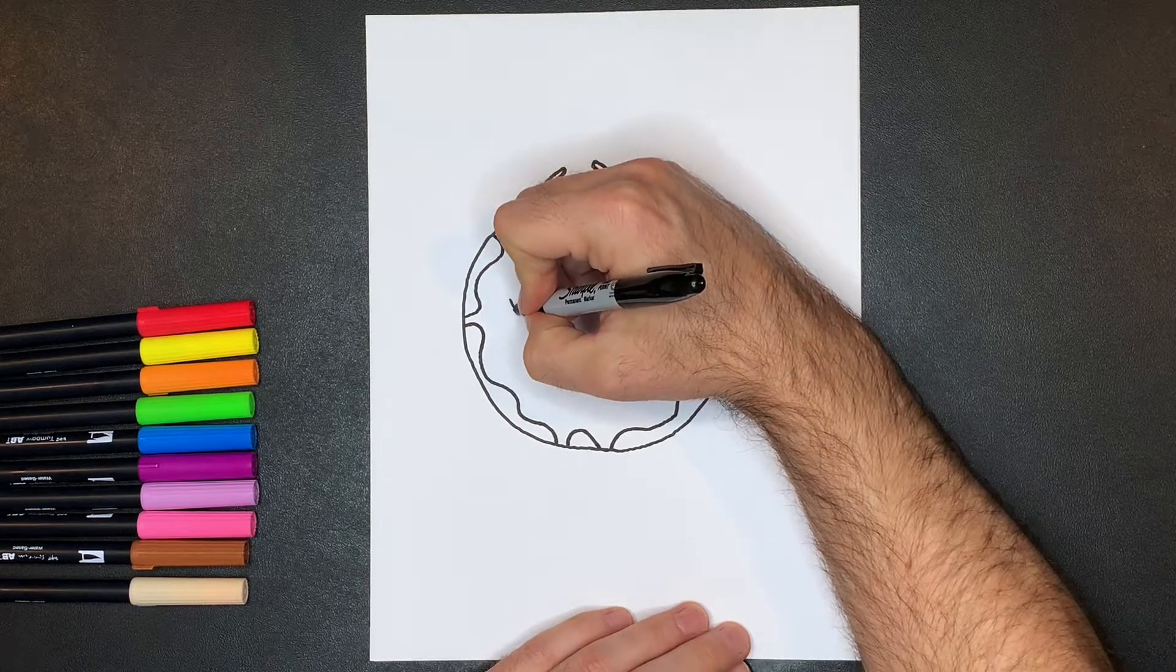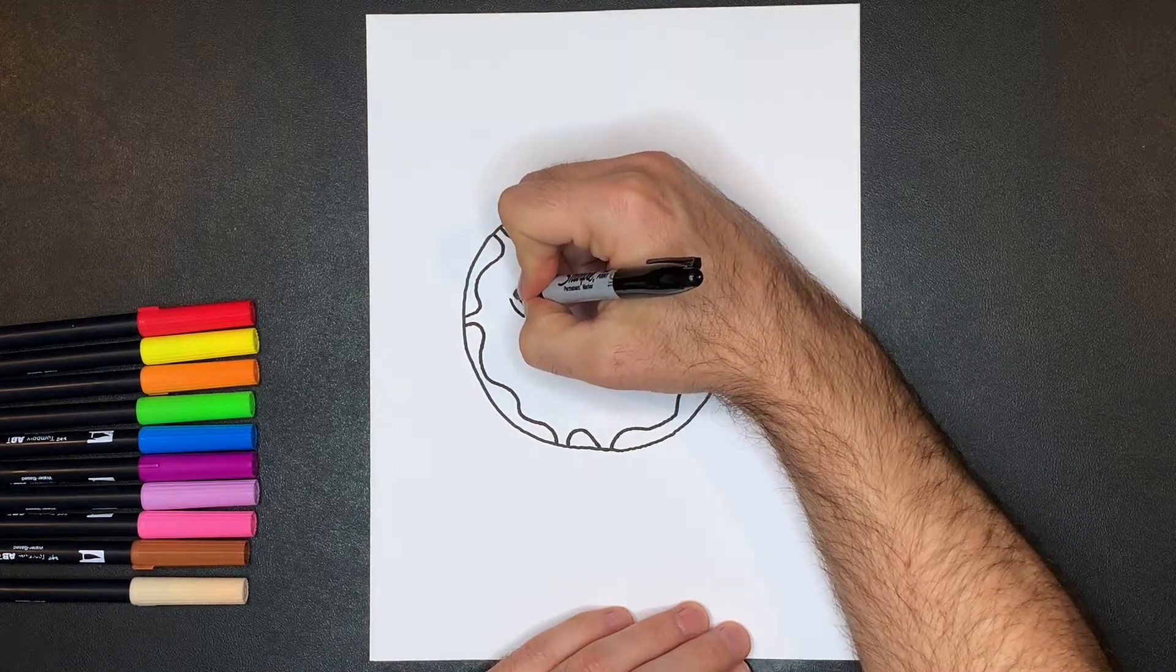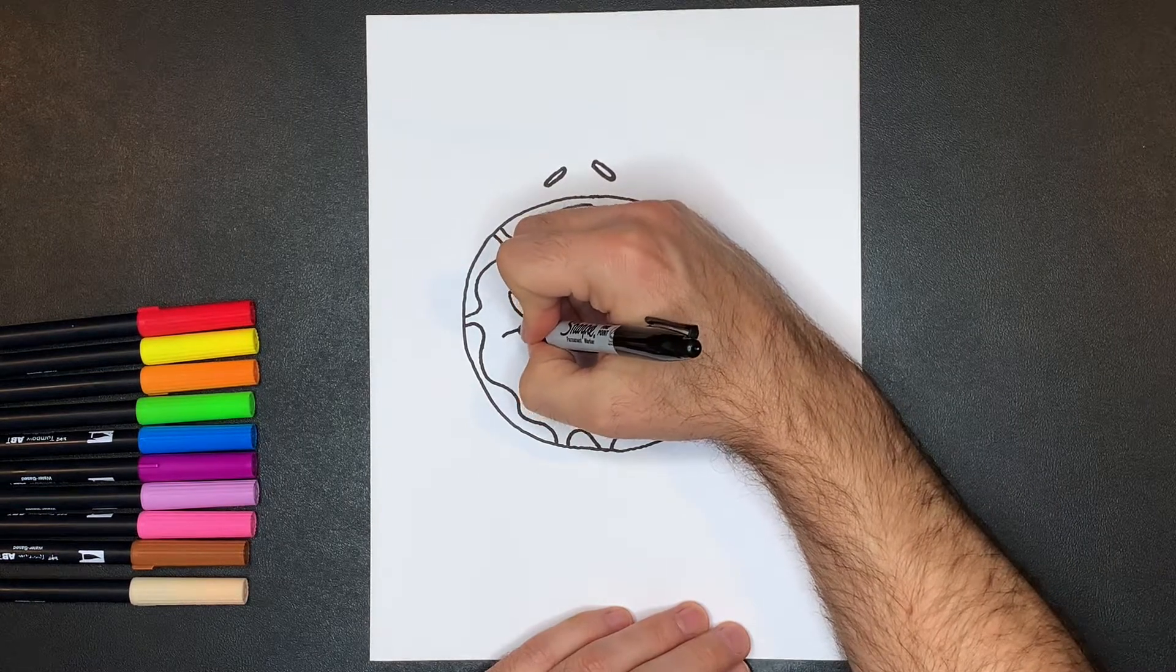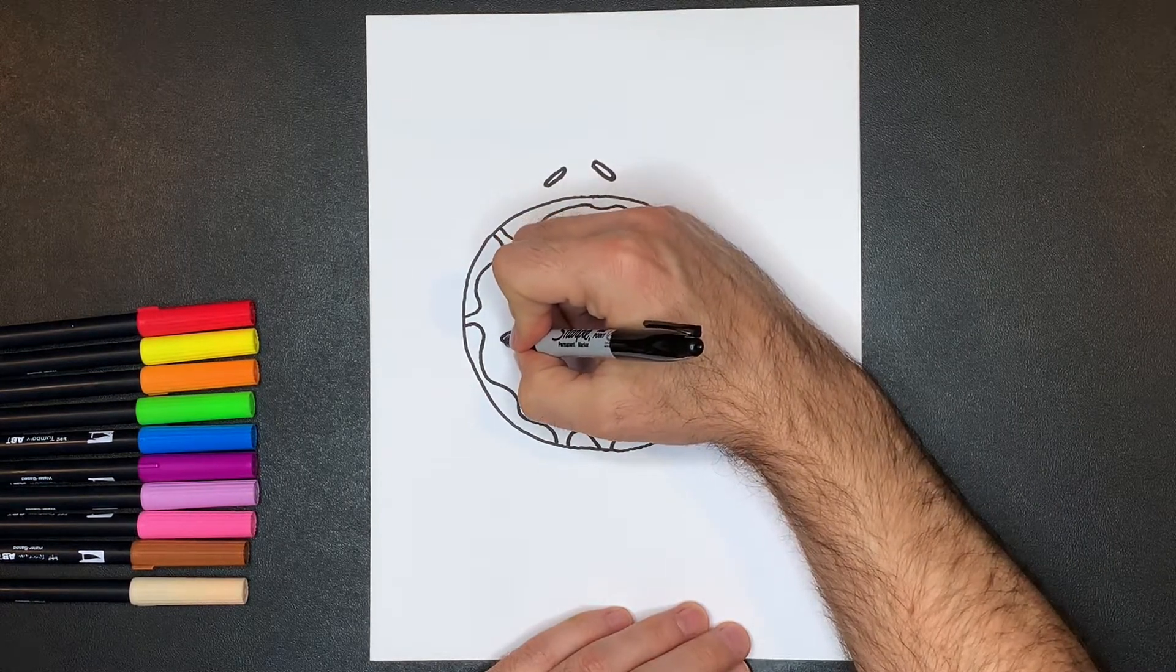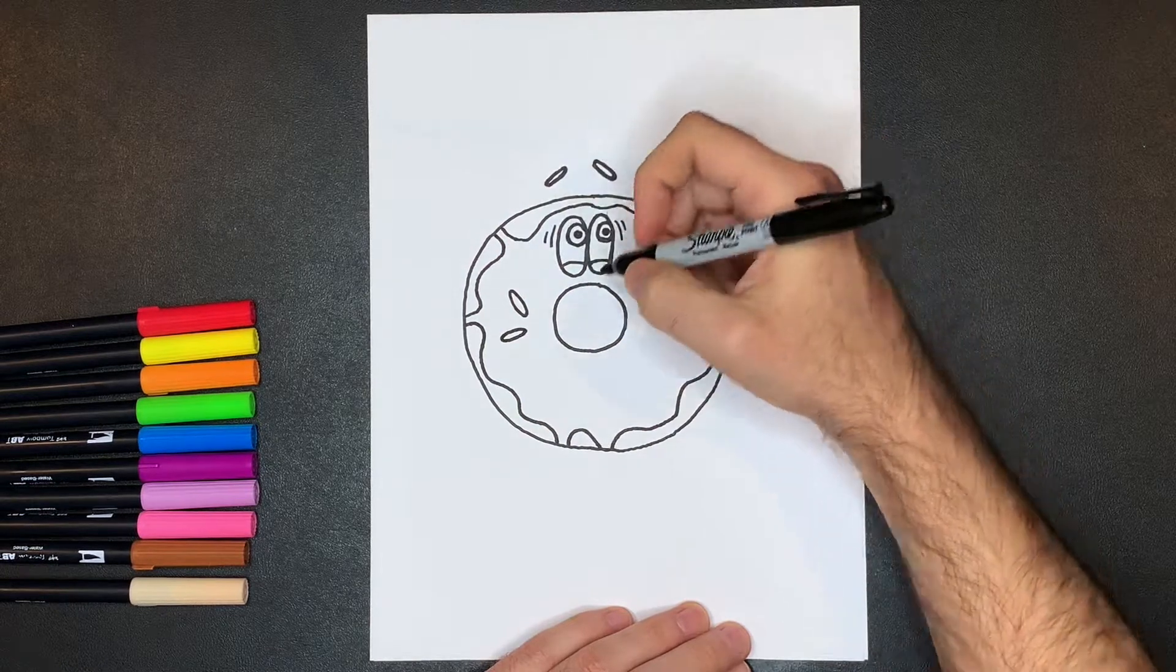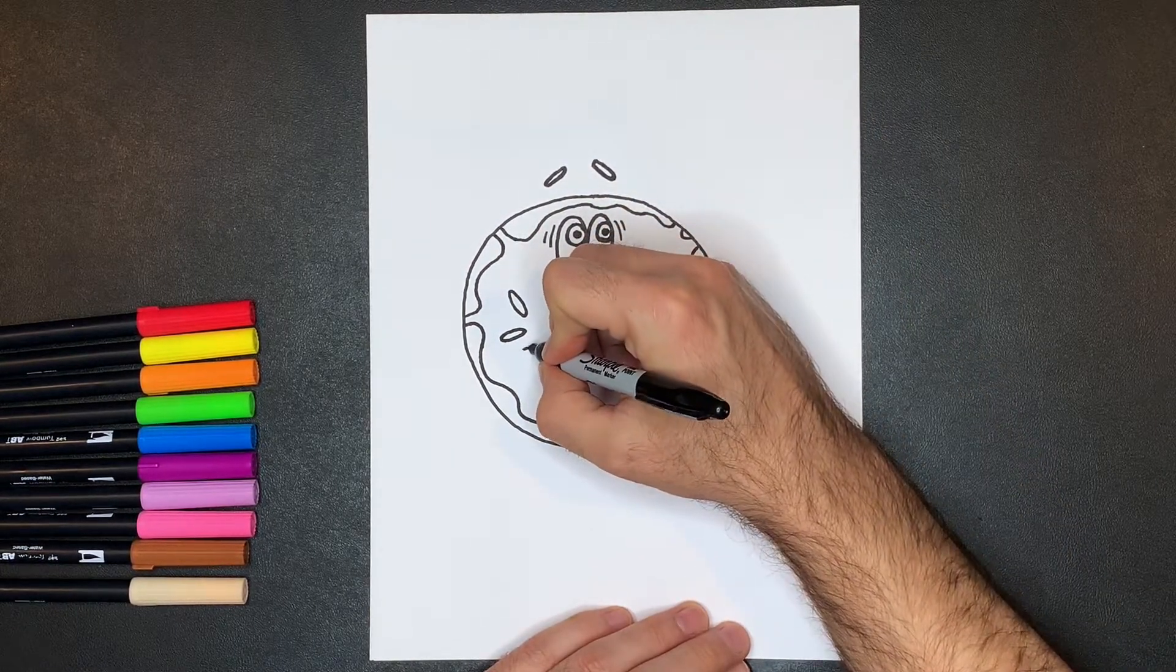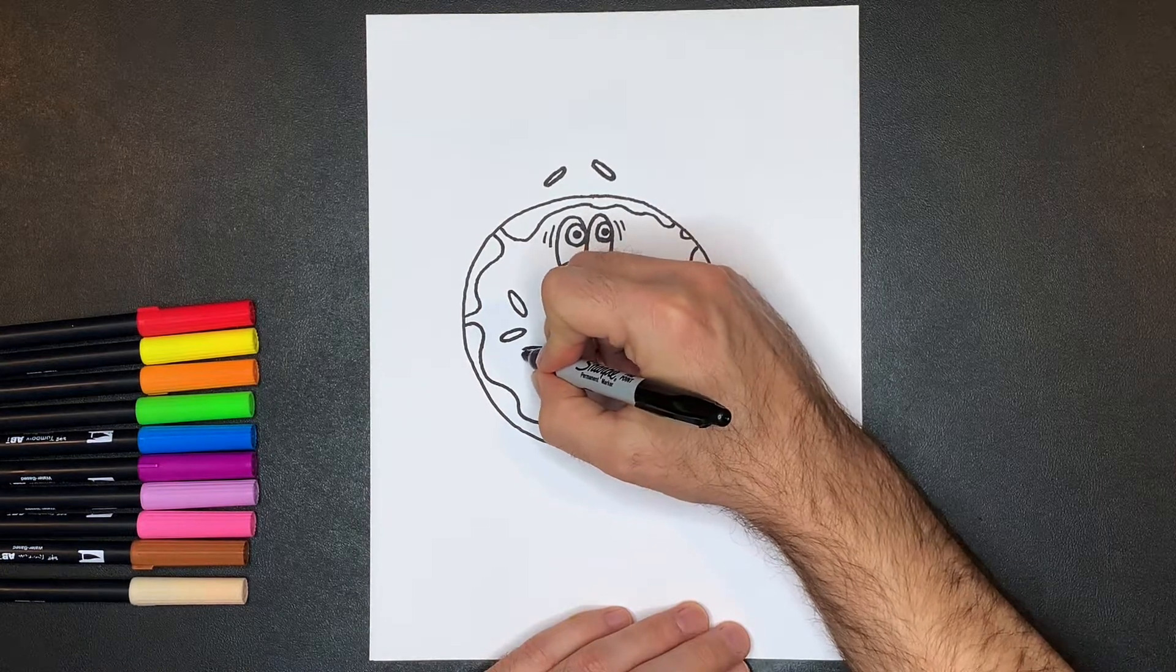So we're going to start here, turn around, make that sprinkle, and these go all over the place because sprinkles don't follow a particular pattern or direction. They're just kind of all over the place. So feel free to make as many or few as you want.